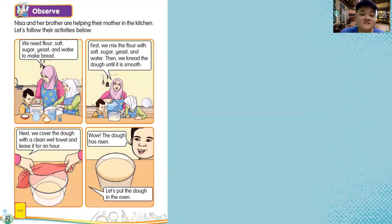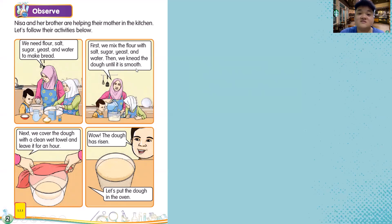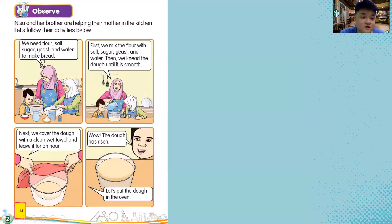Firstly, we mix the flour with salt, sugar, yeast, and water. Then we knead the dough until it is smooth. Next, we cover the dough with a clean wet towel and leave it for one hour. And look — the dough has risen! The dough has become very big. In the earlier picture it was so small, but after one hour the dough has become big.